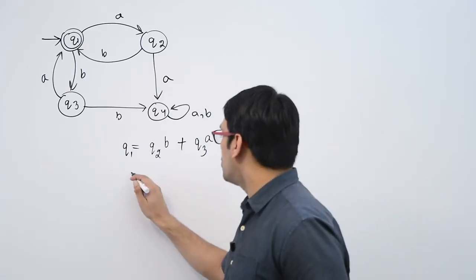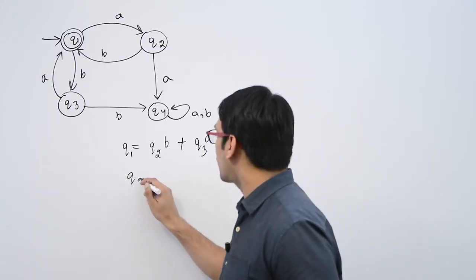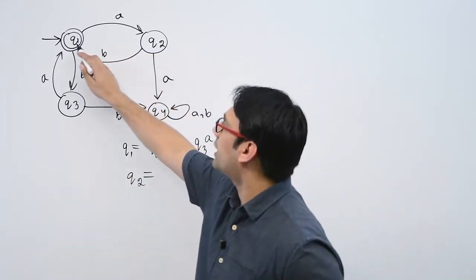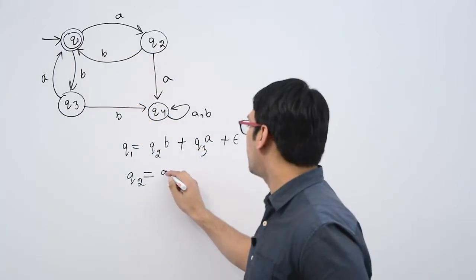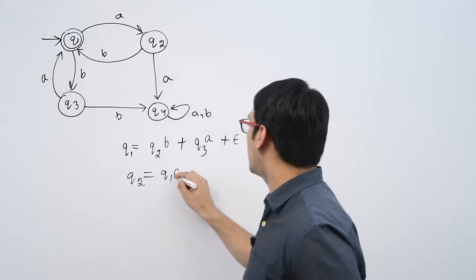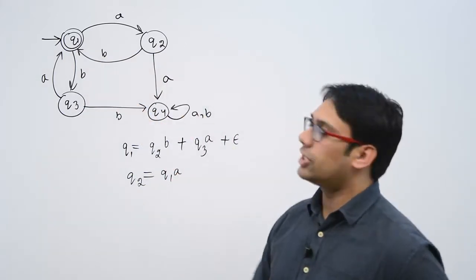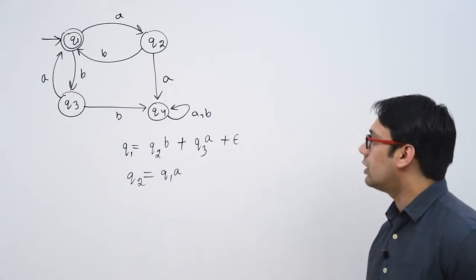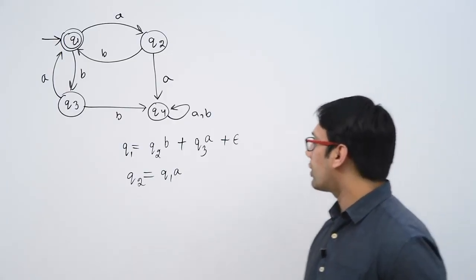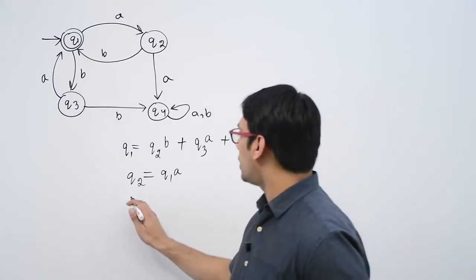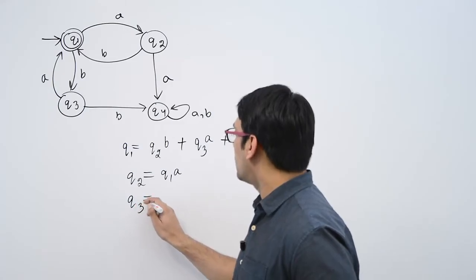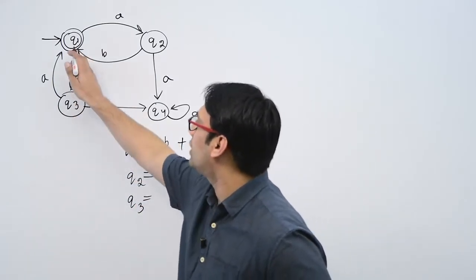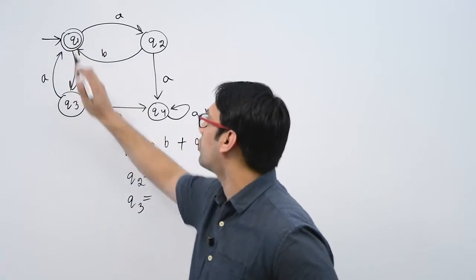If you are at Q2, how can you reach Q2? To reach Q2 you have to see A from Q1 — there is no other method to reach Q2. If you want to reach Q3, you can only reach Q3 if you see B from Q1.